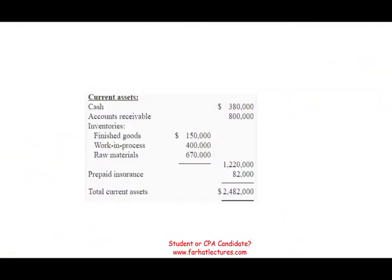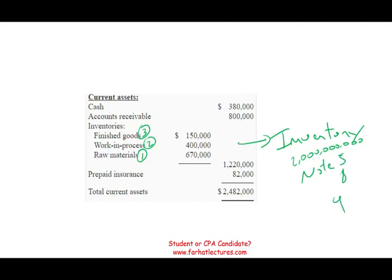On a balance sheet for a typical manufacturing company, inventories consist of three accounts: raw material (ready to be manufactured), work in process (partially completed units), and finished goods. A typical retailer has only one account simply called inventory. For a manufacturing company you have three. If you look at the balance sheet of a company like Tesla or Ford, they may show only a total inventory figure and reference a note — such as 'see note 5' — where it breaks down inventory into those three categories.